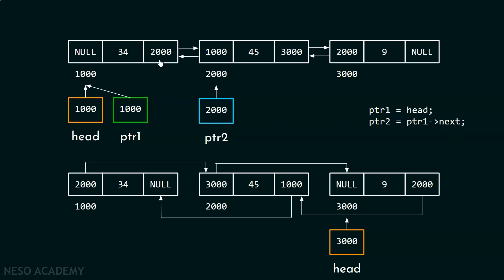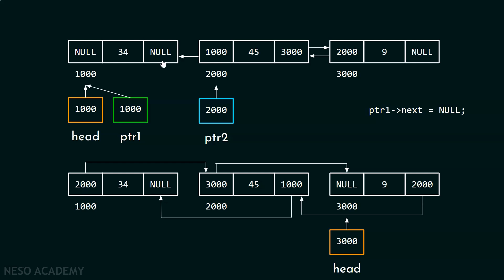After this, we will try to update the next and prev parts of this node using ptr1. First, we will update the next part of this node so that it must hold null, because this is going to be the last node of the list. After putting null, we will lose the reference to the second node, but please note that ptr2 is already pointing to this node, so we will never lose the reference.